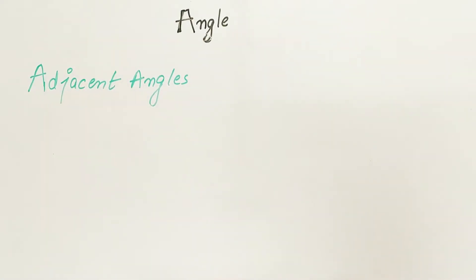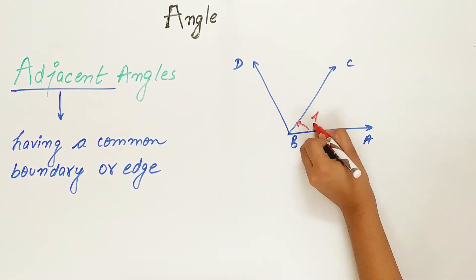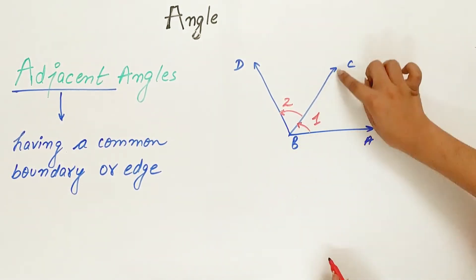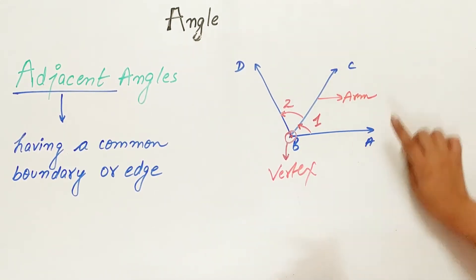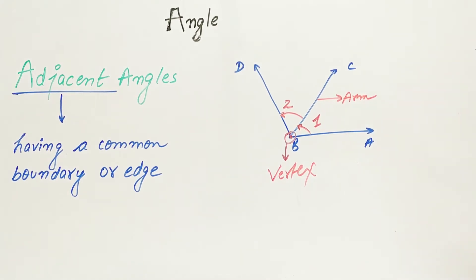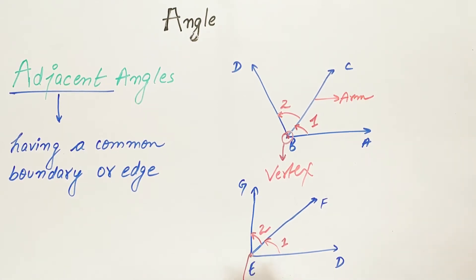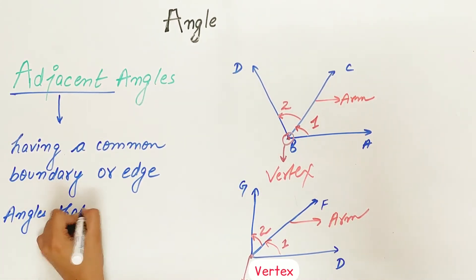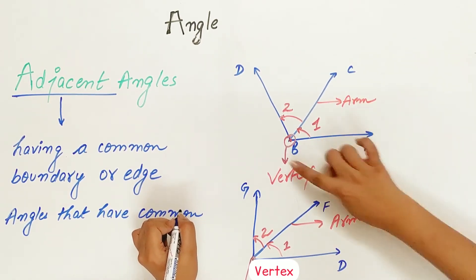Let's look at adjacent angles. Adjacent means having a common boundary or edge. Angle ABC is one angle and angle CBD is the second angle. They both have a common arm CB and a common vertex. So adjacent angles have a common arm and a common vertex — EF in the second example and BC in the first.